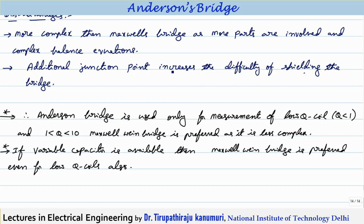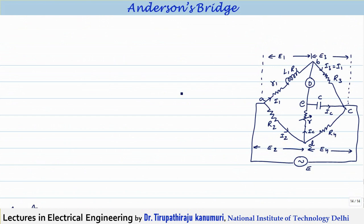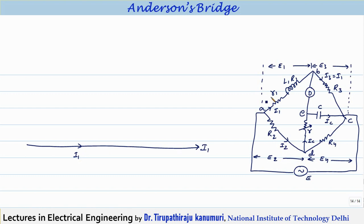Now let us draw the phasor diagram under balanced condition. Taking current I1 as the reference, the drop due to R1 and r1 is I1·(R1 + r1), which is along the I1 axis. Adding jωL1·I1 in the positive imaginary direction gives the value of E1.